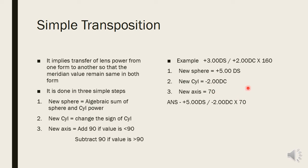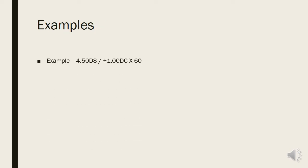Both the original and transposed prescriptions give the same vision to the patient. Generally, prescriptions are written in minus cylinder form as it is easier for the manufacturer. Next example: minus 4.5 diopters spherical with plus one diopter cylinder at 60 degrees. Step one: algebraic sum = minus 4.5 plus one = minus 3.5 diopters as the new sphere.